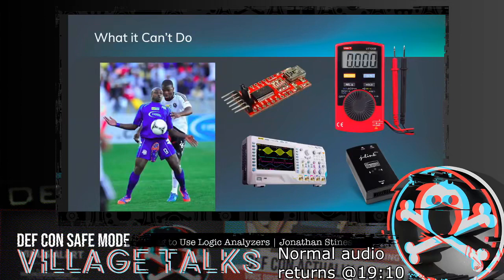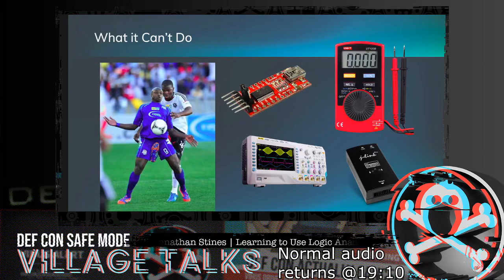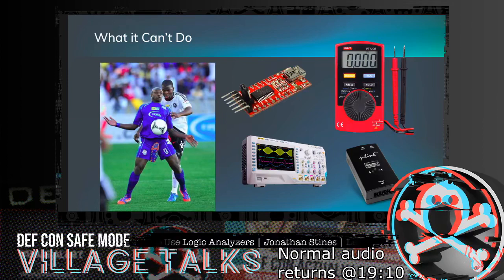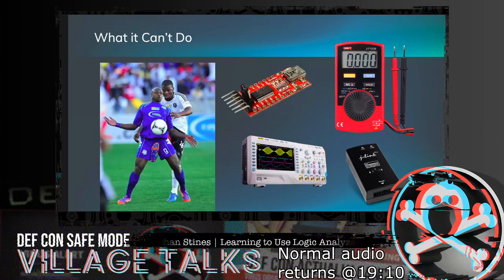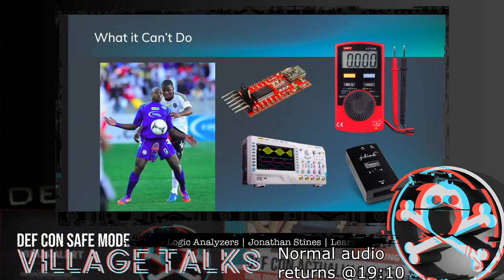From an oscilloscope perspective, you're looking at voltages over a period of time. Logic analyzers sample the voltages at various intervals and reconstruct what that data looks like. Oscilloscopes measure analog, while logic analyzers measure digital. The voltage above a certain threshold is considered a one, and going low is considered a zero — that determination is based on the particular transistor technology threshold.